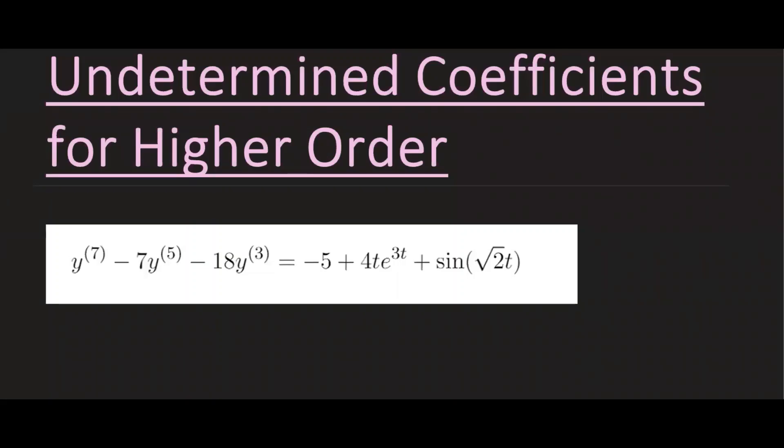Today we're going to talk about the method of undetermined coefficients for higher order differential equations. Here's our first example: we have a seventh order non-homogeneous differential equation. To find the form of the particular solution, first we need to solve the homogeneous case.